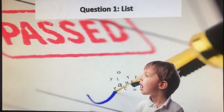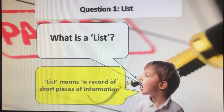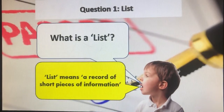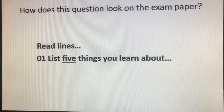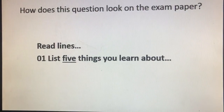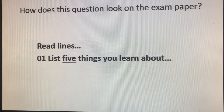Question 1 will ask for a list. A list means a record of short pieces of information. In this question, they're simply looking for five bullet points. The question will say 'read lines' and give you a short number of lines to read, then ask you to list five things you learn about a particular topic, situation, or character.